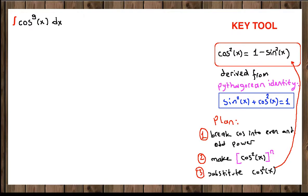Hello everybody! In this video we are going to learn how to integrate cosine ninth of x. For this integration our key tool is Pythagorean identity for cosine squared of x. Our plan is to break cosine into even and odd power and then we are going to make cosine squared of x to some power and do substitution for cosine squared of x.